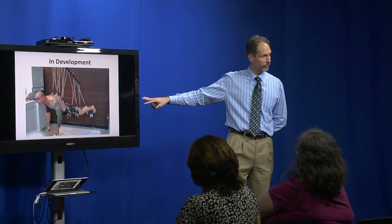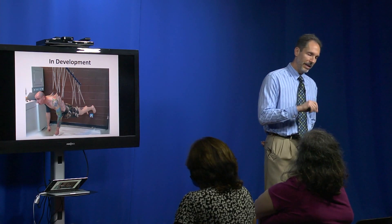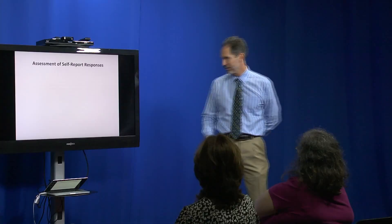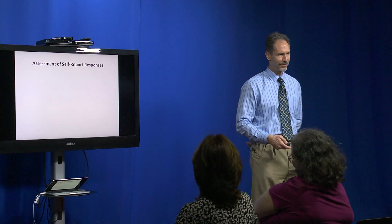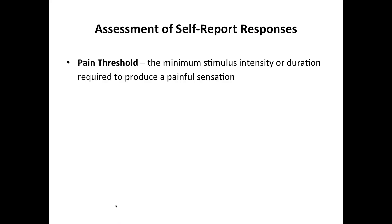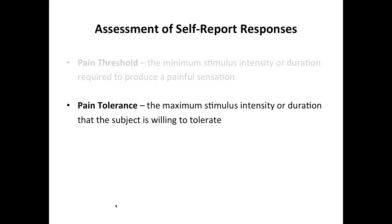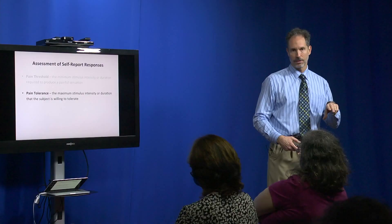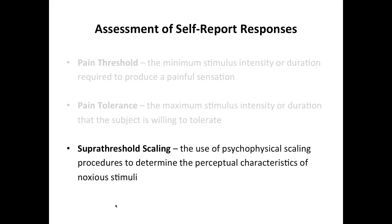People do this for sport, which is an interesting nuance about pain—there aren't many people who seek out cancer or diabetes for fun. But there's culturally some nobility in experiencing pain, and we have to take that into account. In our laboratory, we assess pain threshold—the minimum stimulation required to first produce a painful sensation—and pain tolerance, the maximum stimulus intensity an individual is able or willing to tolerate. We can also do suprathreshold scaling, applying a stimulus and asking people to rate how painful it was on a numerical rating scale.